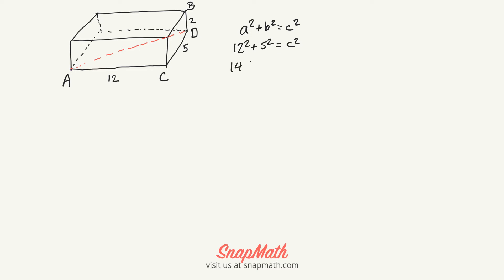This will be 144 + 25 = C², which is 169 = C². When we square root both sides, C equals 13. So this distance is 13.